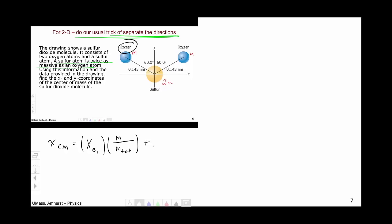And then we will repeat this for the second oxygen and for the sulfur. But before we go and do that, let's clean this up a little bit. Now the total mass is going to be m, m, 2m, so a total of 4m.